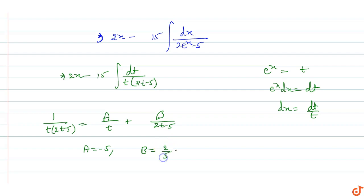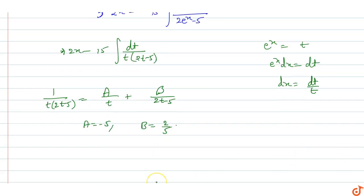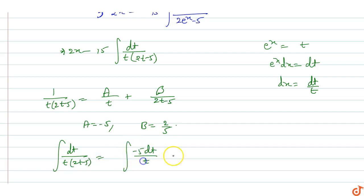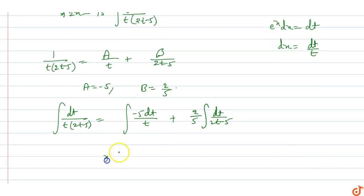Substituting back into the integral: integral of dt upon t(2t - 5) becomes (-1/5) times integral of dt/t plus (2/5) times integral of dt/(2t - 5). This evaluates to (-1/5) ln t plus (2/5)(1/2) ln(2t - 5) plus c.